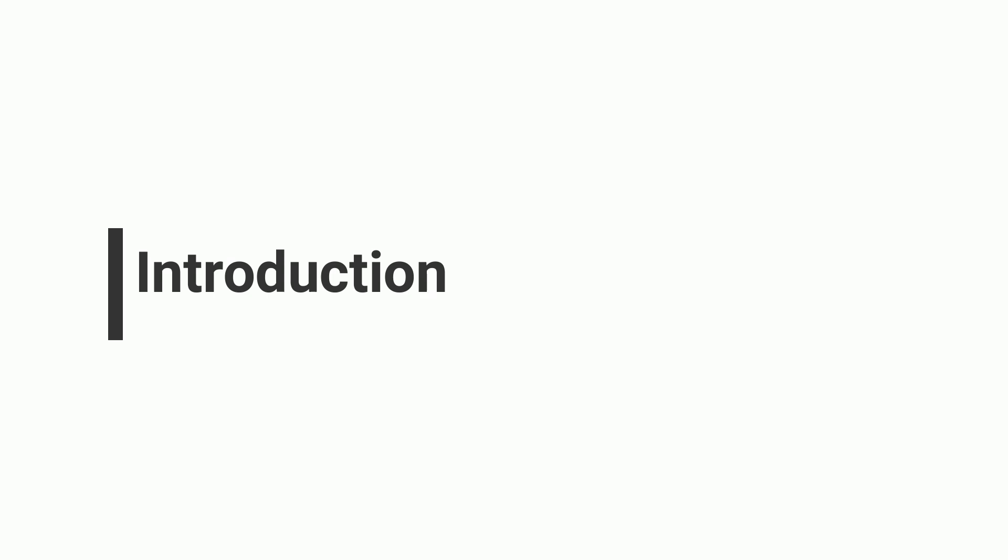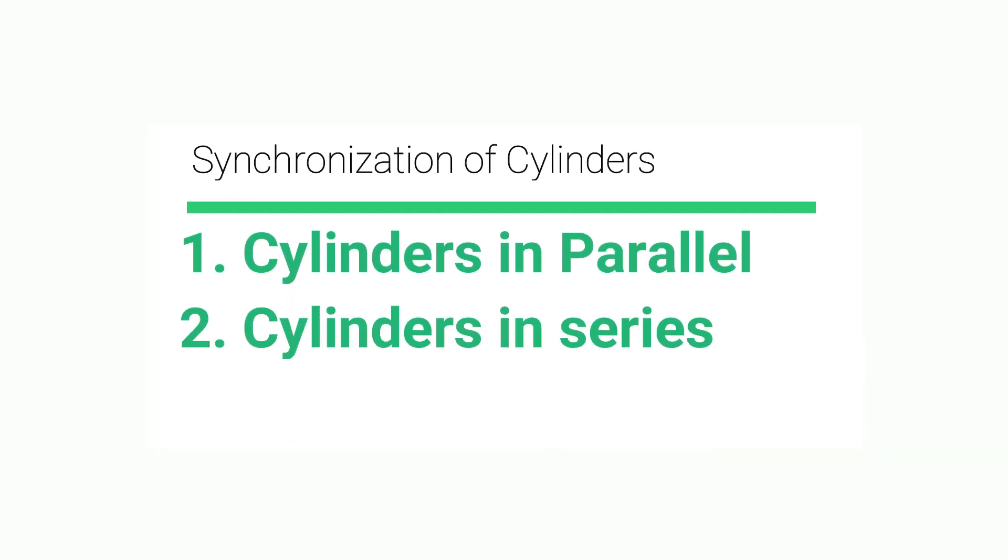Thus, when cylinders have to stroke together, use some method to synchronize them. There are two ways that can be used to synchronize cylinders. First method is cylinders in parallel, and second method is cylinders in series.